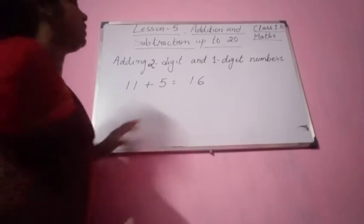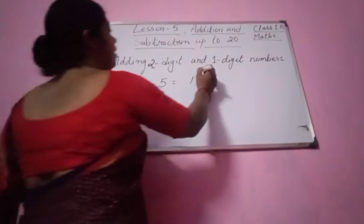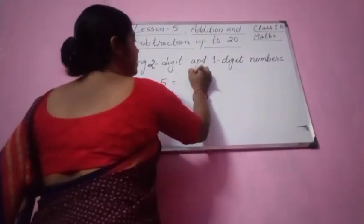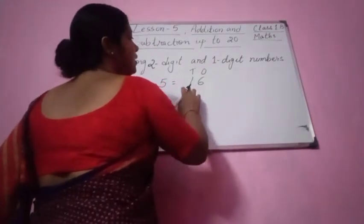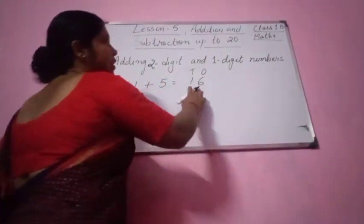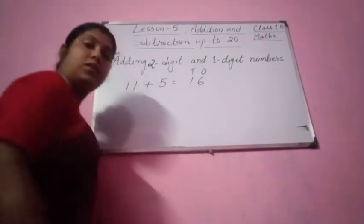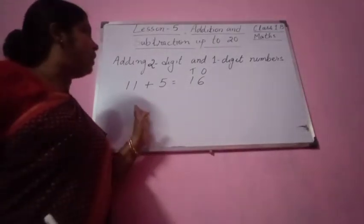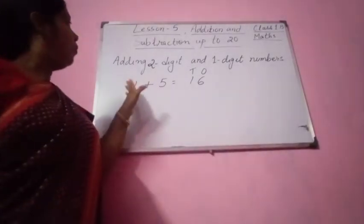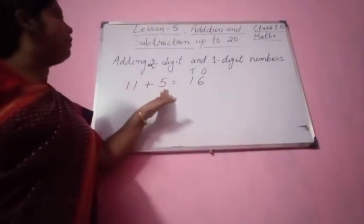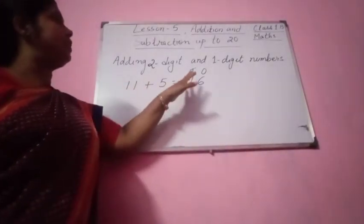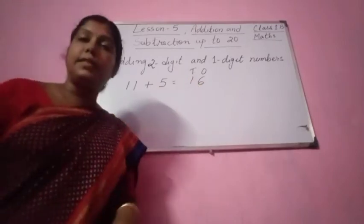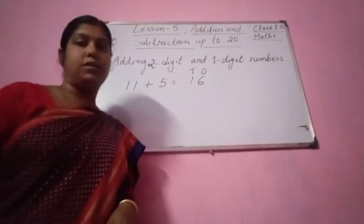Now this is 16. This is 1s and 10s. So 1 ten and 6 ones. You can see here 11 plus 5 equal to 16 — 1 ten and 6 ones.